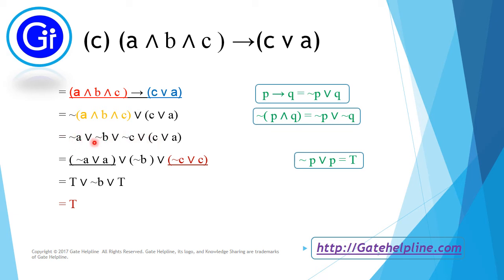Now the expression contains only OR operators. Using the associative operation, we evaluate it: ¬A ∨ A and ¬C ∨ C, each of which results in T by the tautology formula. So we are left with T ∨ ¬B ∨ T. Doing OR with a tautology results in T, so option C is a tautology.